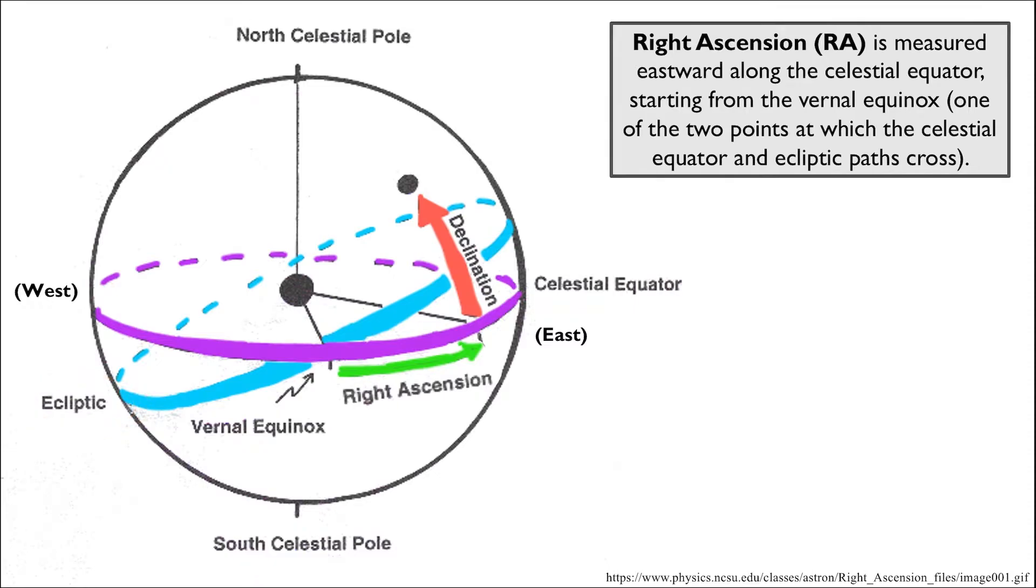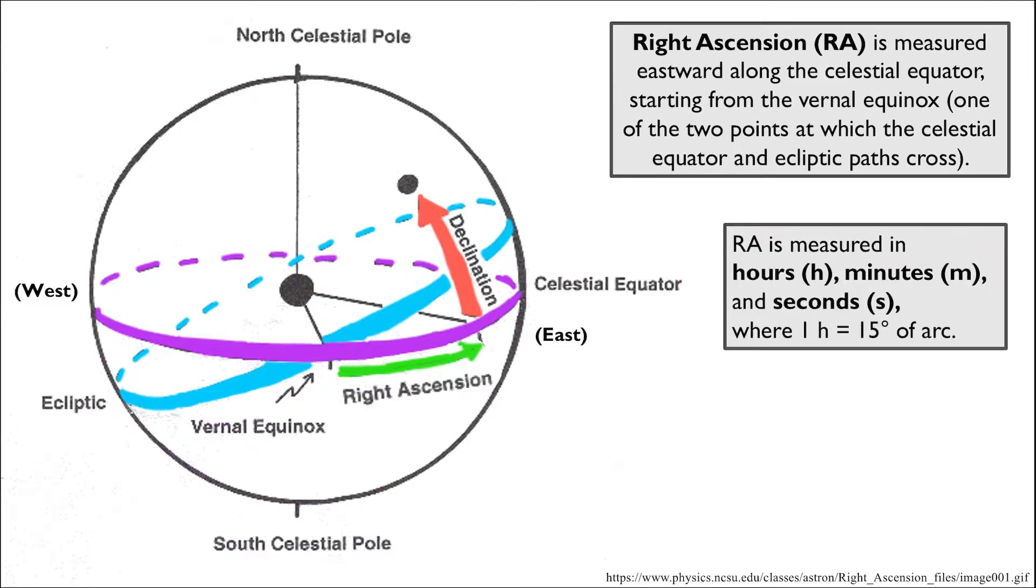Right ascension, unlike declination, is not measured in degrees. Instead, it is measured in hours, minutes, and seconds. Though we can convert from hours to degrees by stating that one hour is equal to 15 degrees of arc.